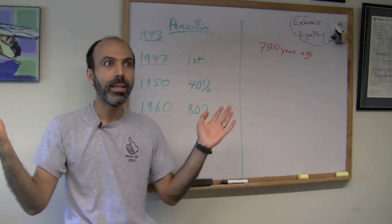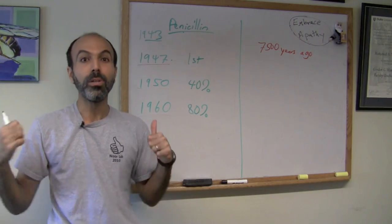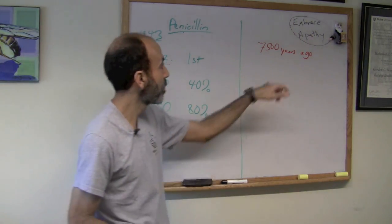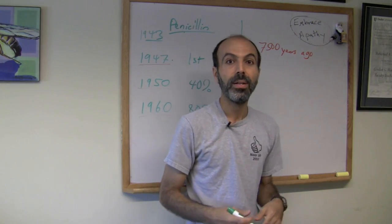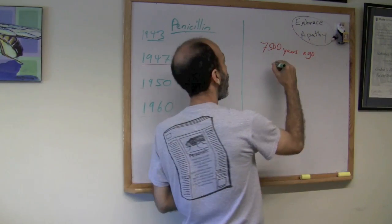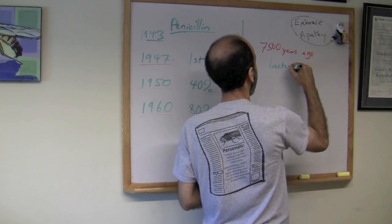Well, you may be thinking that happens in bacteria, but not humans. We're special, we're different. Well, 7,500 years ago, in European populations, all adults were lactose intolerant.